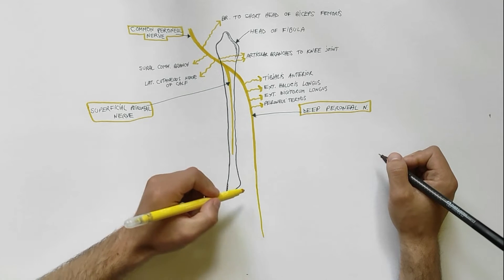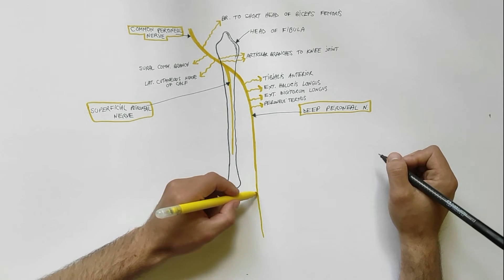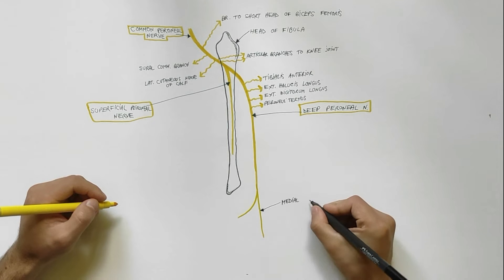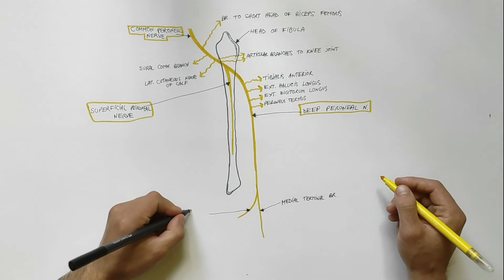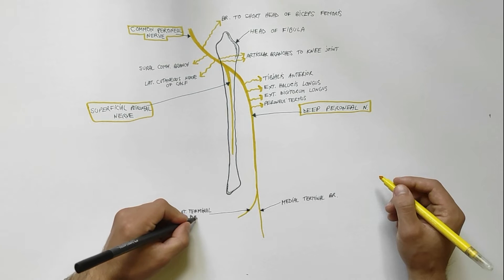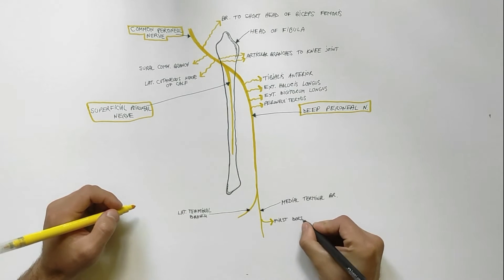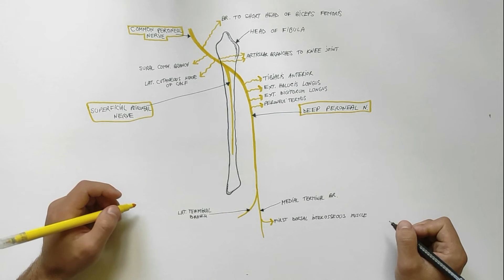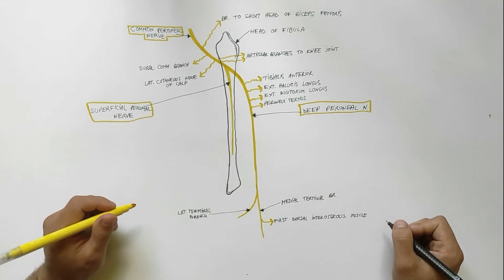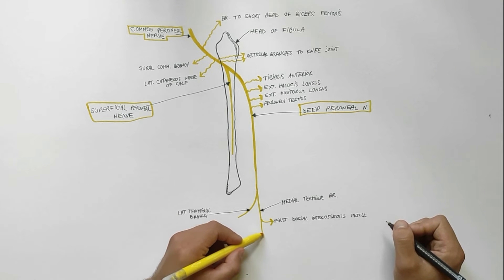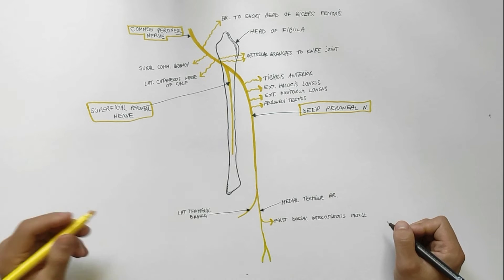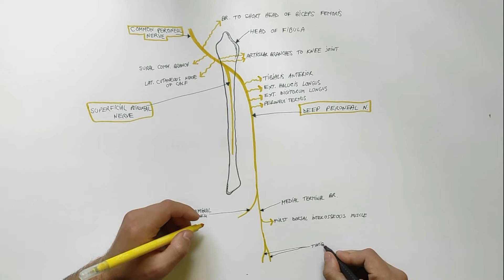Close to the ankle joint, deep peroneal nerve terminates by dividing into medial and lateral terminal branches. The medial terminal branch gives a motor branch to the first dorsal interosseous muscle and at the level of the first interosseous space divides into two dorsal digital nerves which supply the adjacent sides of the greater and second toes, thus supplying the skin of the first interdigital cleft.